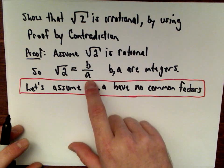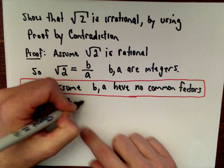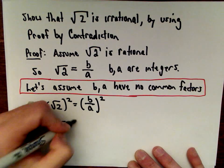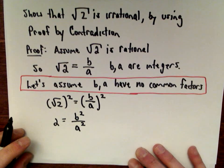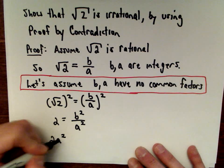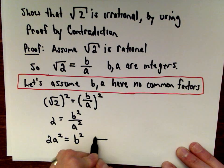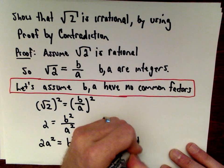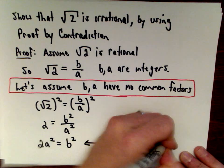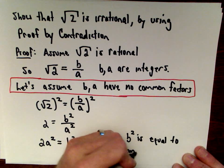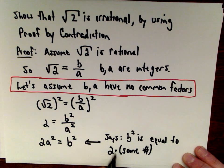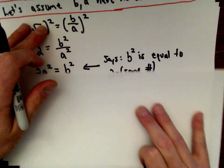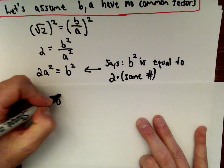So, the square root of 2 equals b over a. We can square both sides — that's totally legal. On the left side, the square root of 2 squared is just 2. On the right side, we'd have b squared over a squared. Multiplying both sides by a squared gives us 2a squared equals b squared. This says that b squared is equal to 2 times some number, which means b squared is even.